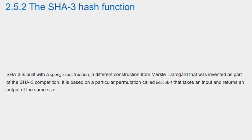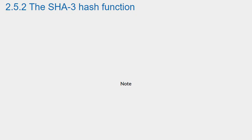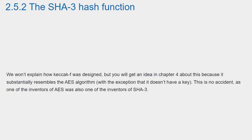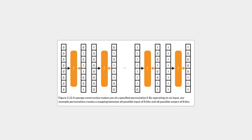SHA-3 is built with a sponge construction, a different construction from Merkle-Damgård that was invented as part of the SHA-3 competition. It is based on a particular permutation called Keccak-F that takes an input and returns an output of the same size. We won't explain how Keccak-F was designed, but you will get an idea in Chapter 4, because it substantially resembles the AES algorithm, with the exception that it doesn't have a key. This is no accident, as one of the inventors of AES was also one of the inventors of SHA-3.